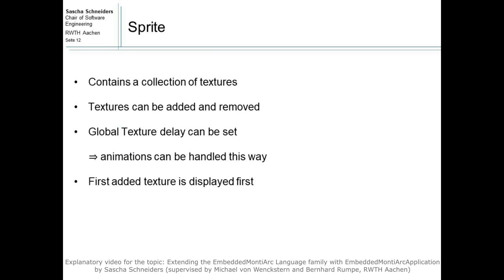Sprites are two-dimensional entities to which one or more textures can be assigned. Additionally, a texture delay can be specified. It denotes the amount of ticks that needs to pass until the texture is displayed. The order in which textures are added to a sprite is the same as the animation play order.